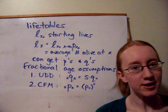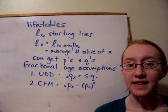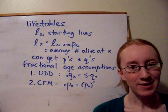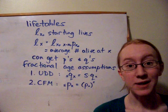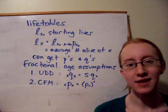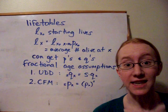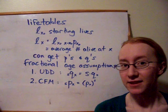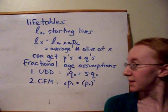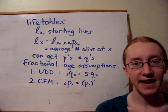The second assumption, which turns out to be a really nice result as well but is slightly less common than UDD, is CFM, which stands for constant force of mortality. What we do in that case is assume that within each year of age the force of mortality is actually constant. We can calculate the force of mortality within each year by taking negative the log of 1PX, and that gives us the result that sPX is equal to 1PX raised to the power of s.